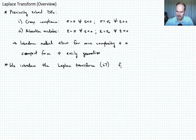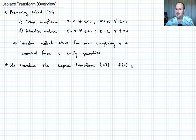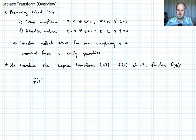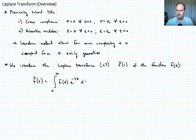We're going to define the Laplace transform as F-bar of S, where the over-bar denotes that it's a Laplace transform. So F-bar(S) of the function F(T) is defined as follows: F-bar(S) is equal to the integral from zero to infinity of F(T) times e to the negative ST, dT. We'll call that equation one.